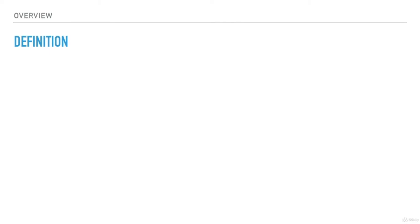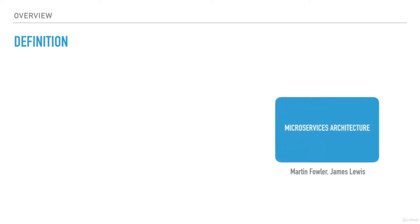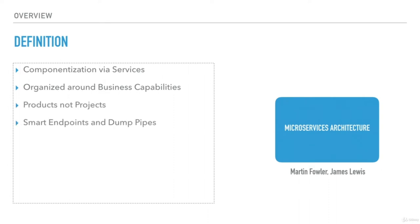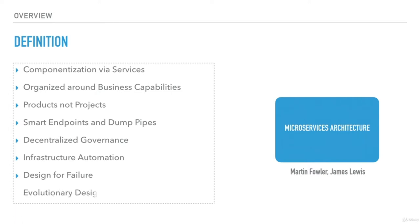Though the software community started talking about microservices as far back as 2011 and 2012, a consistent definition was not available for long. Netflix referred to it as fine-grained SOA and other enterprises used different terms. The most accepted definition is provided by Martin Fowler and James Lewis. Martin Fowler is one of the most renowned thought leaders in software development, and James Lewis is the principal consultant at ThoughtWorks. According to them, the microservice architecture follows characteristics including: componentization via services, organized around business capabilities, products not projects, smart endpoints and dumb pipes, decentralized governance, infrastructure automation, design for failure, and evolutionary design.